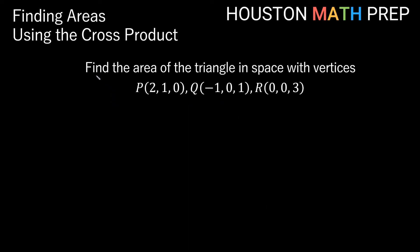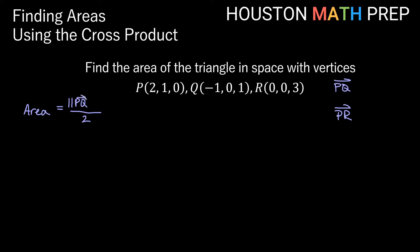Let's work through one more type of problem. Find the area of the triangle in space with vertices P = (2, 1, 0), Q = (-1, 0, 1), and R = (0, 0, 3). These are points in space, not vectors — they are the corners of the triangle. The area of the triangle is going to be finding the area of the corresponding parallelogram and dividing by 2. We need vectors, so we'll find two vectors with the same initial point — vector PQ and vector PR — then find the magnitude of PQ cross PR and divide by 2.